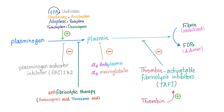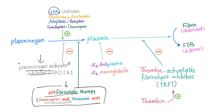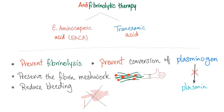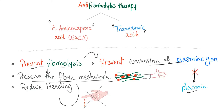Who stimulates fibrinolysis? TPA. Who inhibits it? Something from within and something from without. From within: plasminogen activator inhibitors 1 and 2. From outside the body: anti-fibrinolytic therapy, such as aminocaproic acid and tranexamic acid. These drugs inhibit the conversion of plasminogen into plasmin, therefore preserving the fibrin and inhibiting its dissolution. In brief, anti-fibrinolytic therapy is anti-TPA. Its two main members — epsilon aminocaproic acid and tranexamic acid — prevent fibrinolysis by preventing conversion of plasminogen into plasmin, thereby preserving the fibrin meshwork and reducing bleeding.